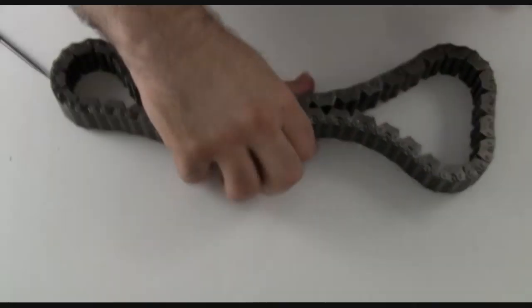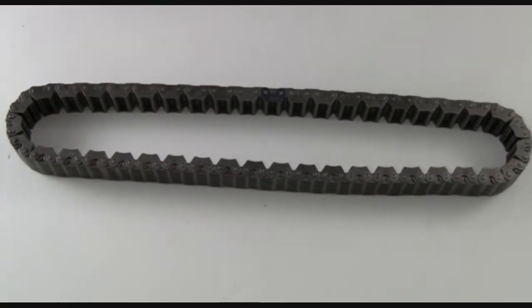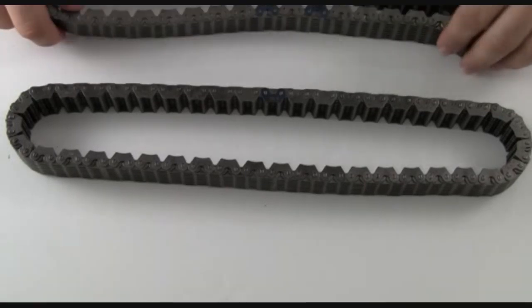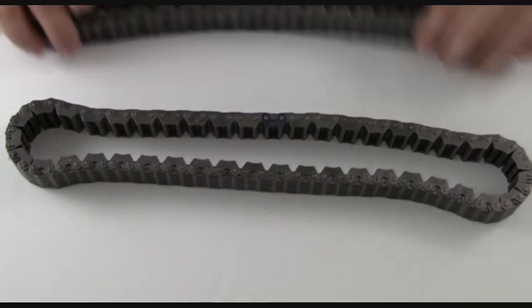So if you're not sure what year the transfer case you have is, you can identify them just by the chain. Just look for the blue links.